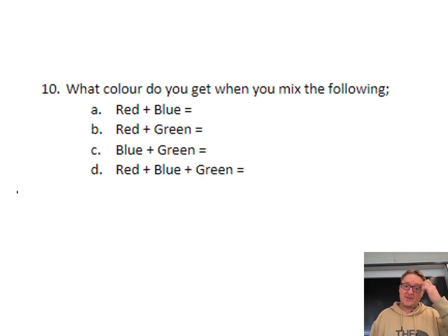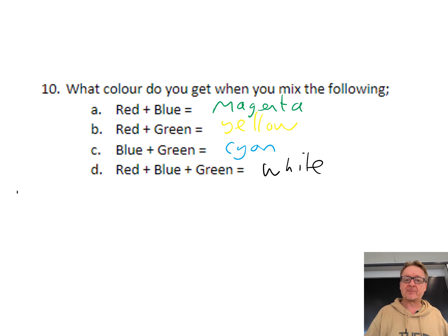What color do you get when you mix the following? Red and blue makes magenta. Red and green makes yellow. Blue and green makes cyan. Red, green and blue makes white.